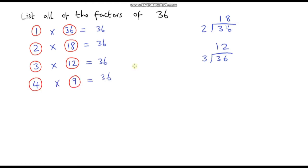Now let's check out 5. Is 5 a factor of 36? Well no it is not, because 5 times 6 is 30 and 5 times 7 is 35, so we're going to have a remainder of 1. So 5 is not a factor of 36. Now let's move on to 6. Does 6 go into 36? Well yes it does — 6 times 6 is 36. So 6 is a factor of 36.